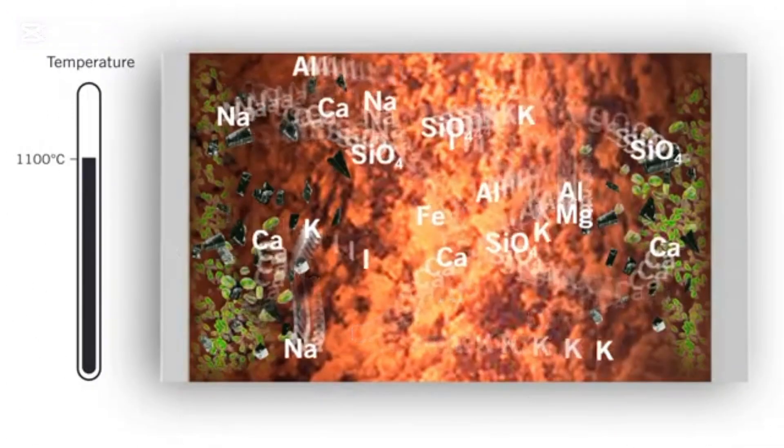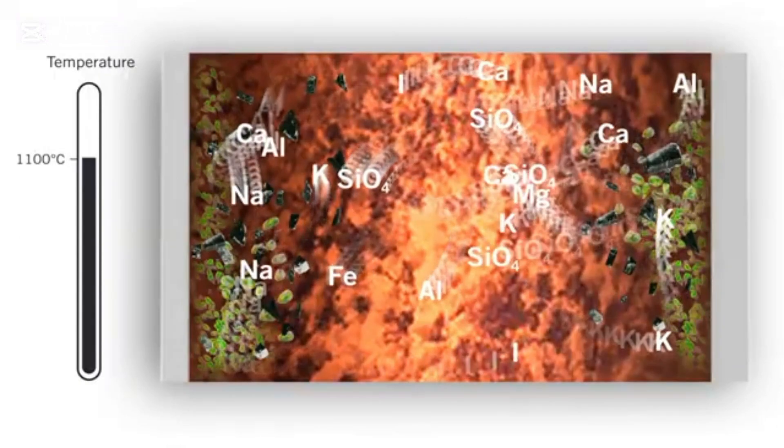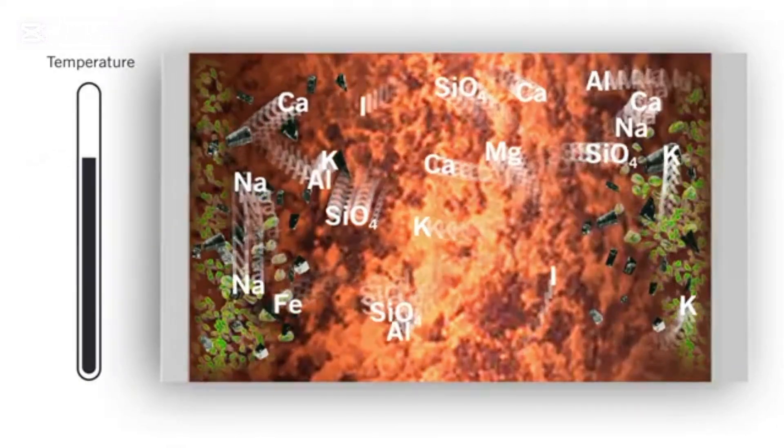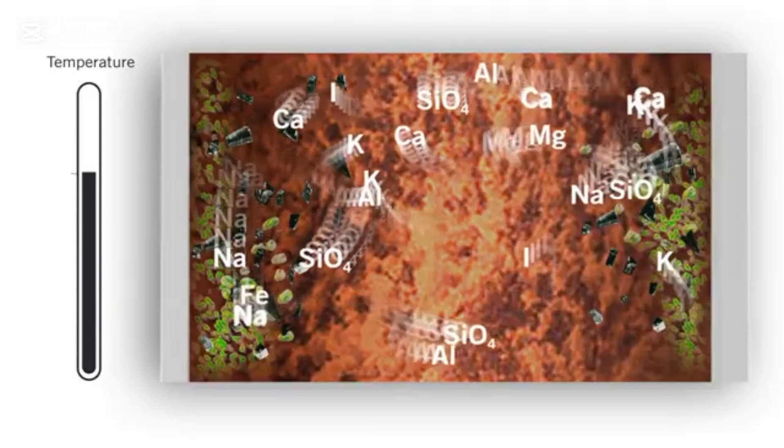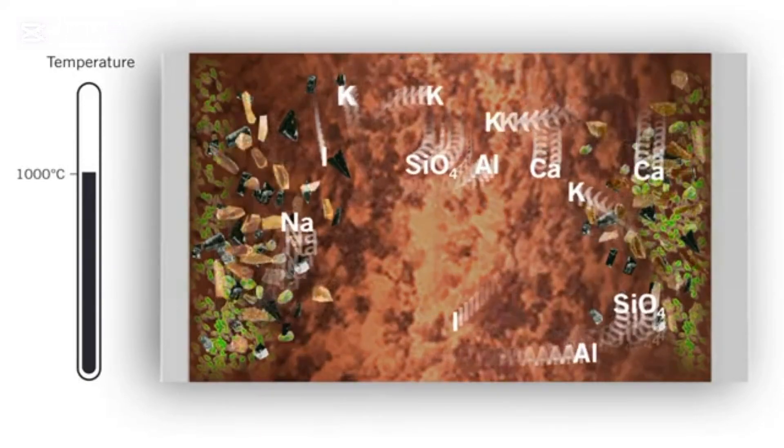Both pyroxenes and olivine are iron and magnesium-rich silicate minerals, so now that both have formed, the melt has a lot less iron and magnesium in it. That means, as temperatures continue to decrease, the minerals that form can only be made using the elements left over in the melt.